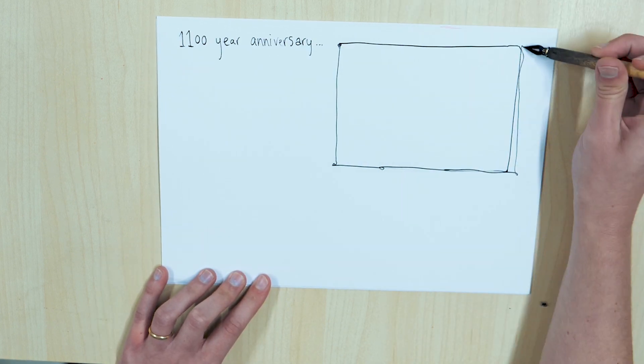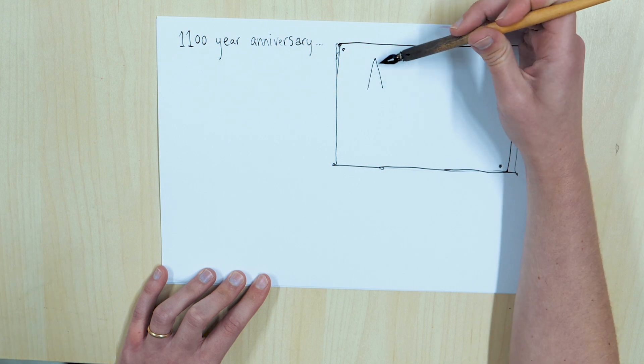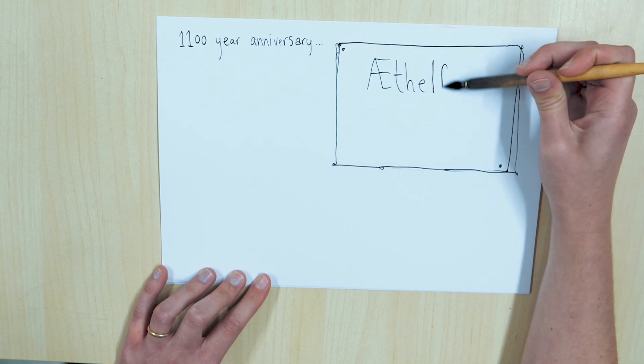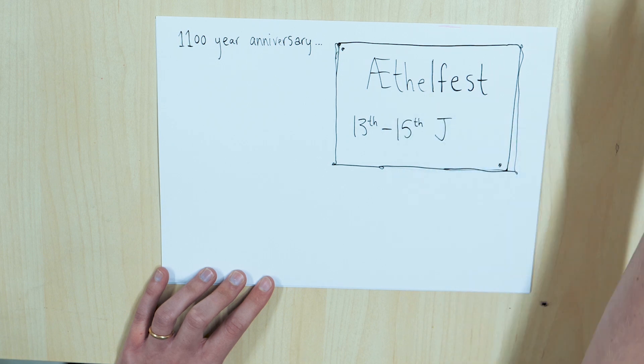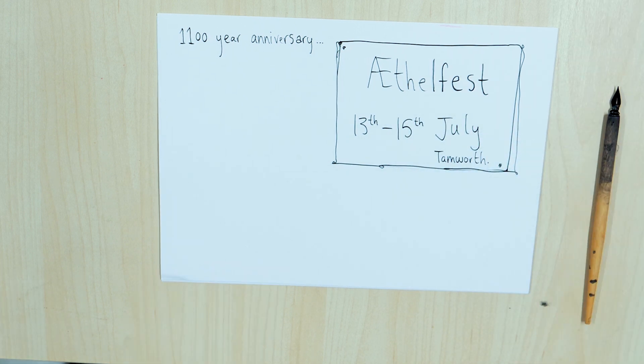The 12th of June 2018 marks the 1100 year anniversary of Aethelflaed's death in Tamworth. Celebrate her legacy and join us in remembering this incredible leader and woman by coming along to Aethelfest, the 13th to the 15th of July in Tamworth.